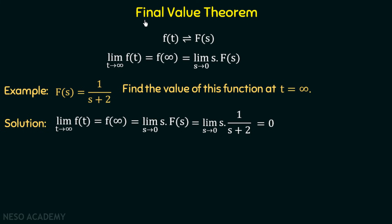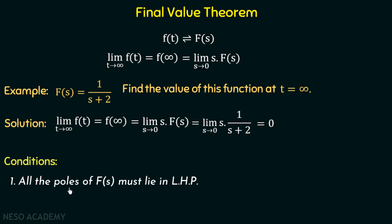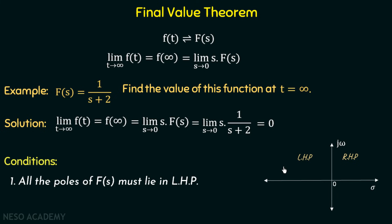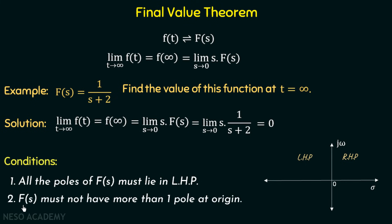Now we move to the conditions for the final value theorem to be applicable. Signal f must satisfy two conditions. Condition 1: all the poles of F must lie in the left half plane — the part of the s plane to the left of the origin. Condition 2: F must not have more than one pole at the origin. Both conditions must be satisfied for the final value theorem to apply.